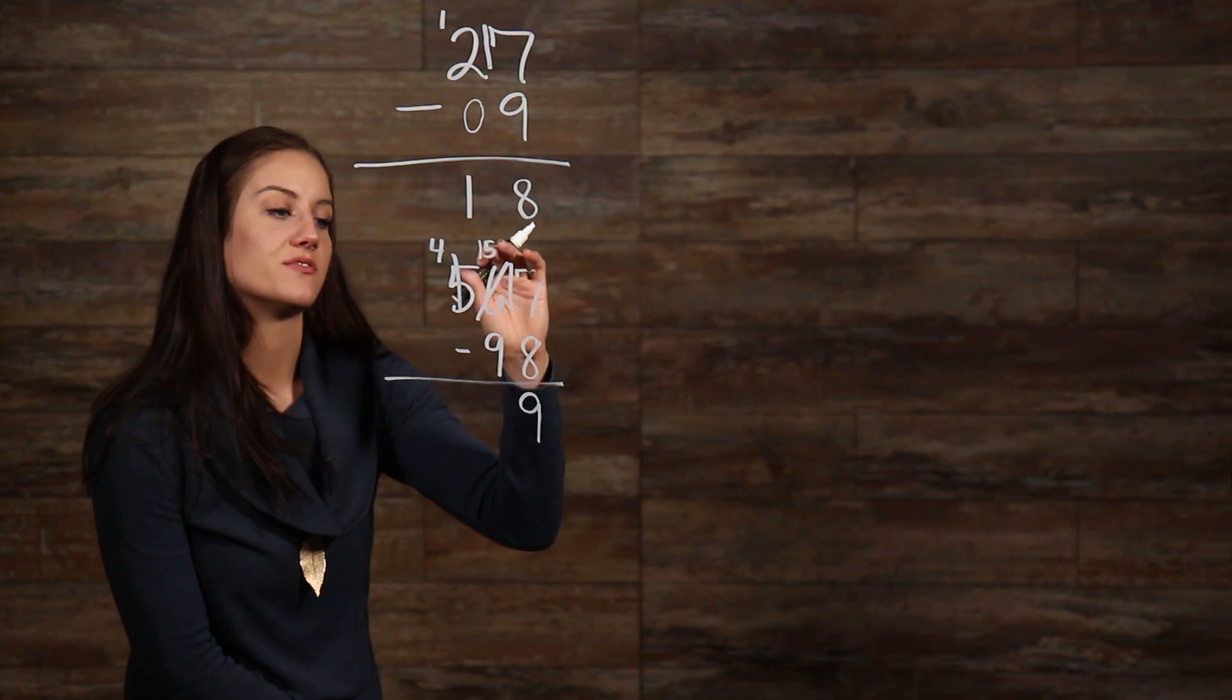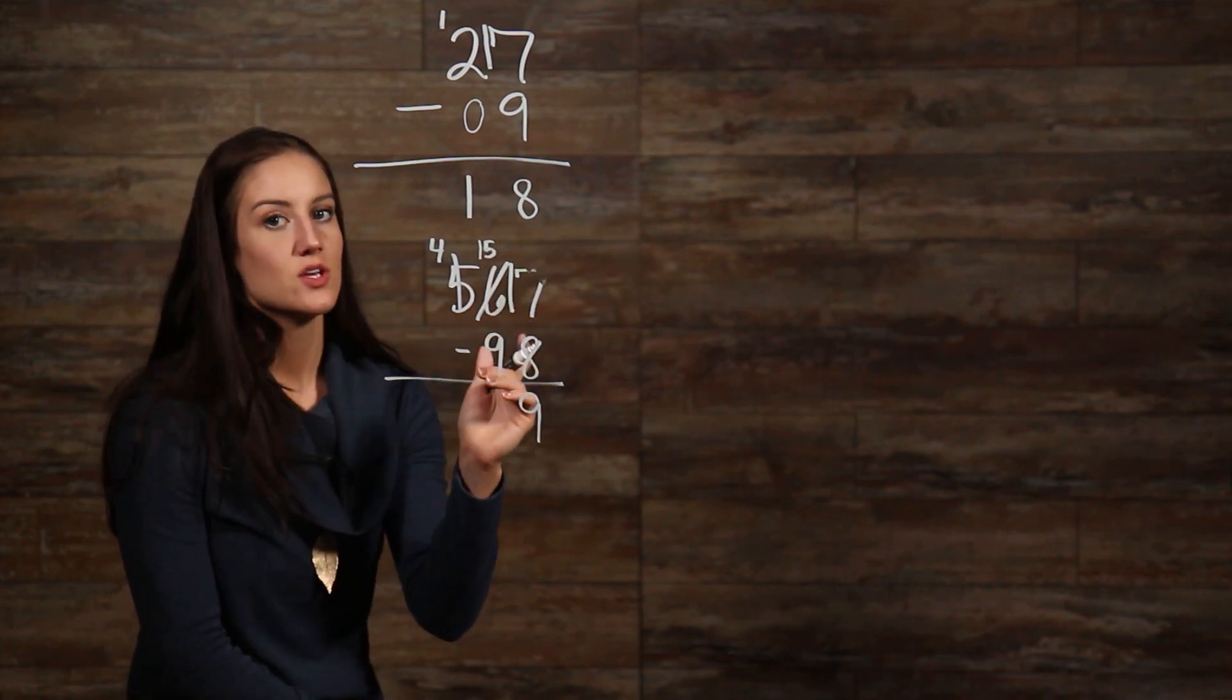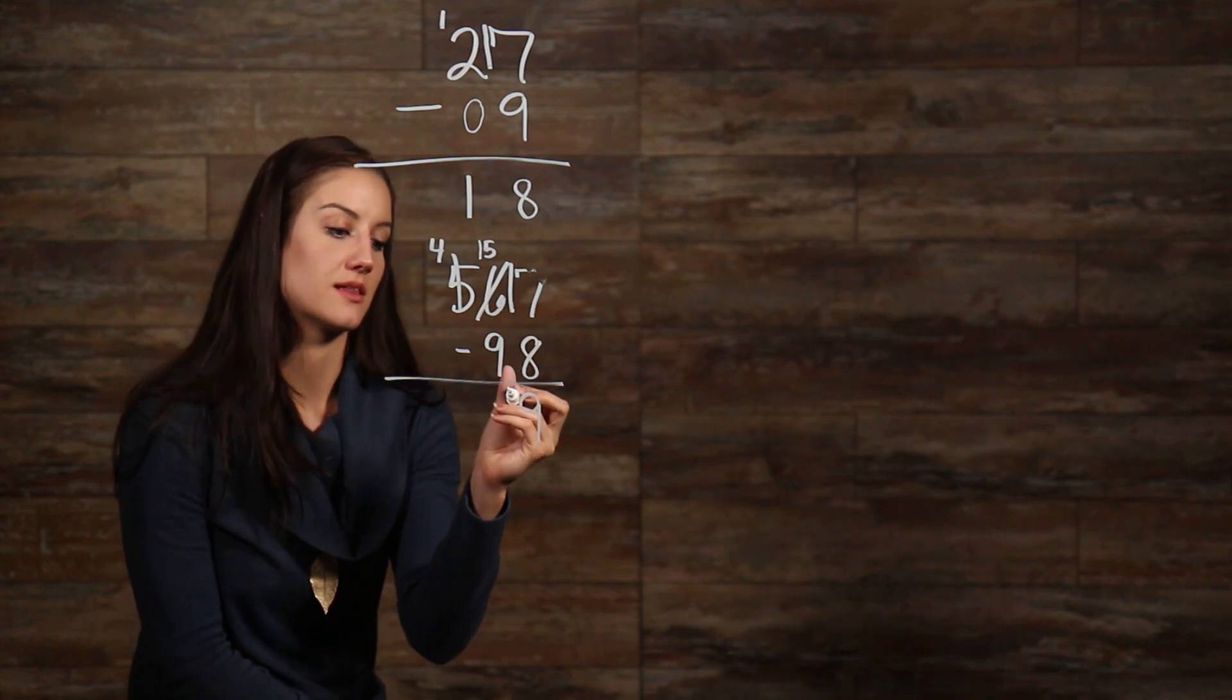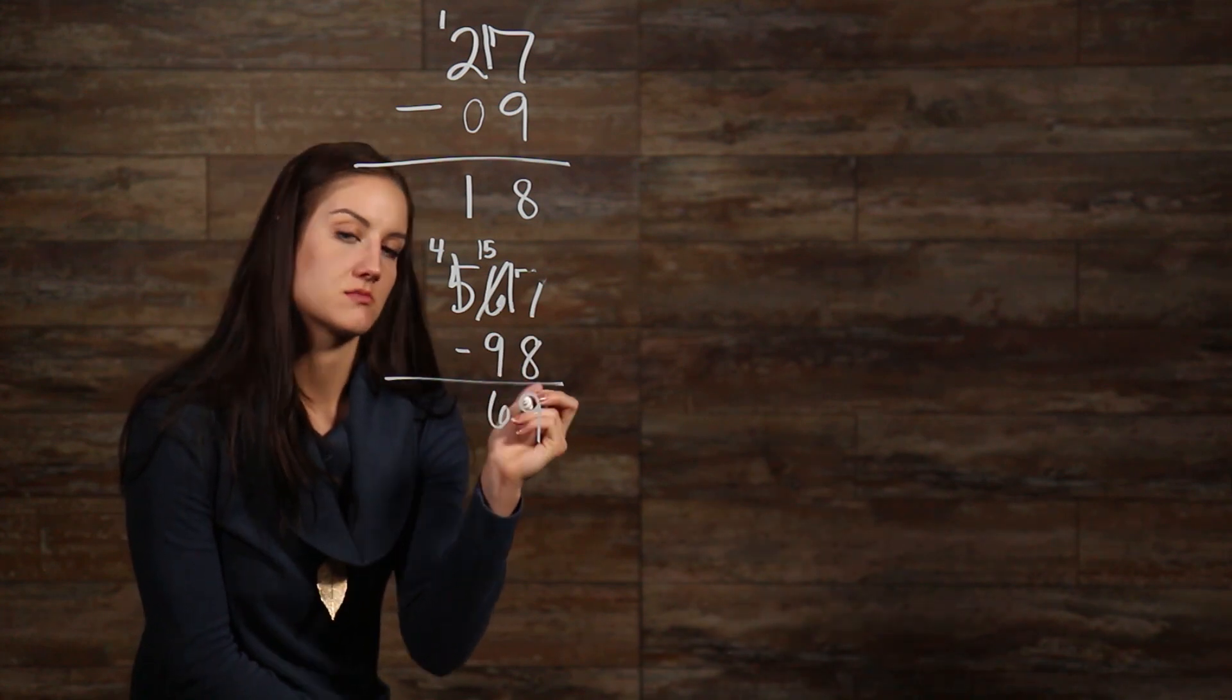Okay, now we have 15 minus 9, which is 6. So, we need to carry that 6 down right here in our tens place, or to the left of our 9.